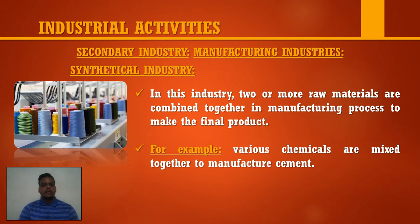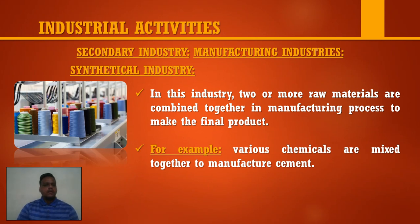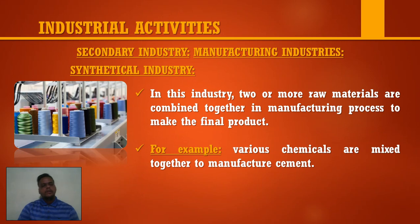Another example of synthetic industry: various chemicals are mixed together to manufacture cement. Similarly, cotton is white, but when you use threads, you can see different colors. The colors and cotton are mixed together and finished goods are produced through this process. This is called synthetic industry.